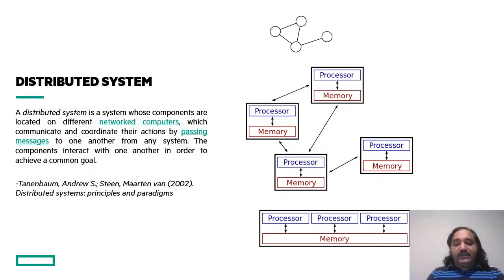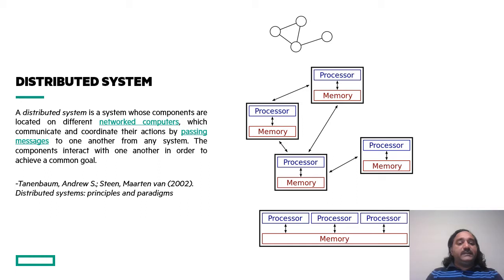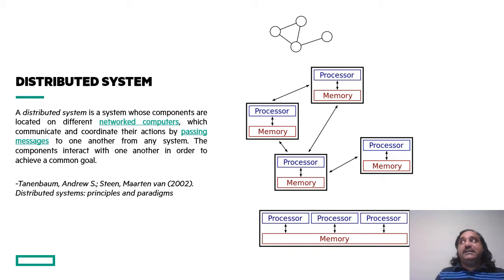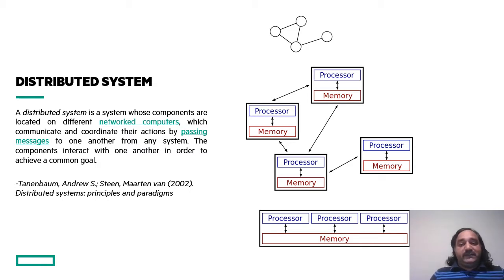Before we get started, let's look back and define what we mean by distributed systems. A definition from Tanenbaum's book on distributed systems: it is a system whose components are located on different networked computers, which communicate and coordinate their actions by passing messages. These components interact with one another in order to achieve a common goal — think of them as state machines coordinating via message passing.